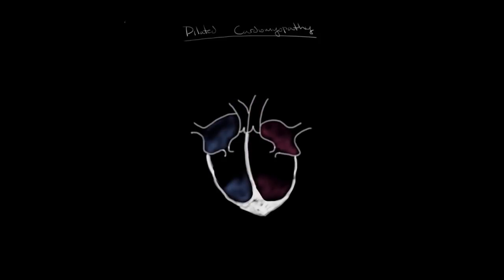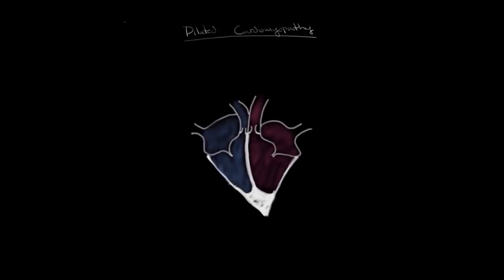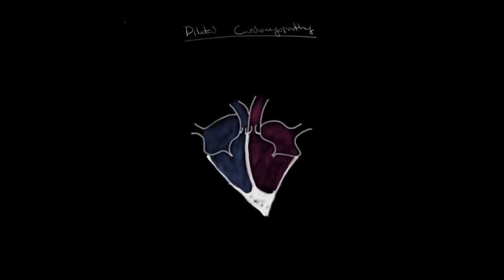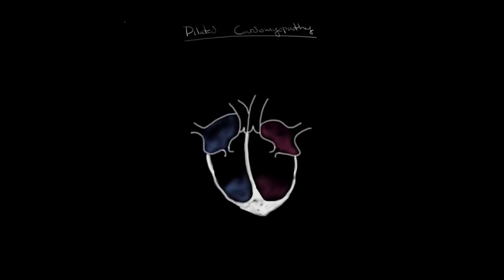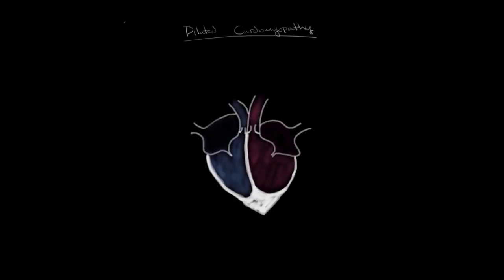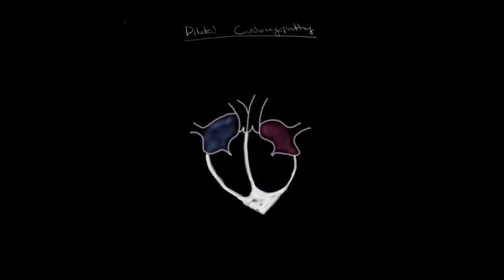A couple of terms to describe here: the first is systole, which is the period of time in which the heart muscle is contracting. During systole, blood is being ejected out of the ventricles to either the body or the lungs. The other period is diastole, during which the muscles of the heart are relaxing, the ventricle size is getting bigger, and blood is drawn into the ventricles — so the ventricles are filling. During systole, the ventricles are contracting and ejecting blood, while the atria are filling; during diastole, the atria empty blood into a relaxed ventricle.